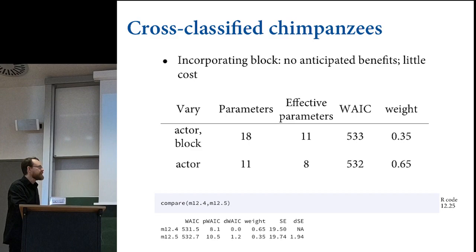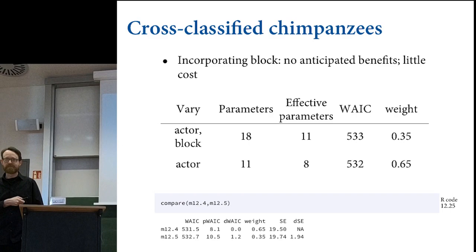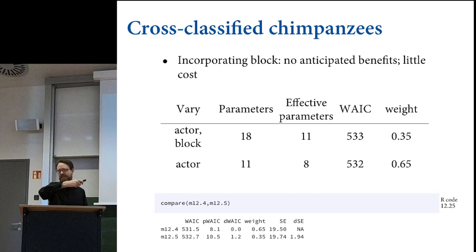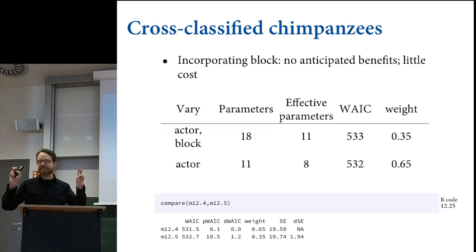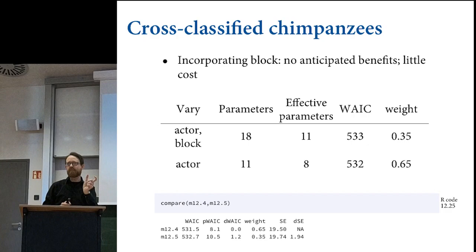Where should your varying effect structure come from? It should come from the structure of the data. If you've got repeat observations, cluster—that's the rule. Usually when I get a dataset, I know the maximal model I'm going to fit because it comes from the scientific question. The first model I fit is the skeletal model that only has varying intercepts for every kind of repeat observation in the dataset. What you get from that is a nonlinear analysis of variance at multiple levels.